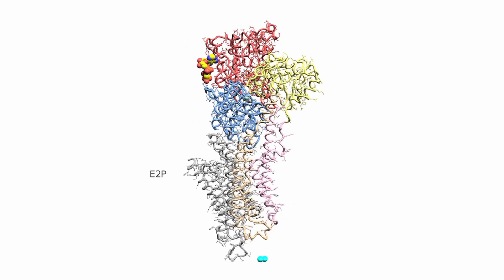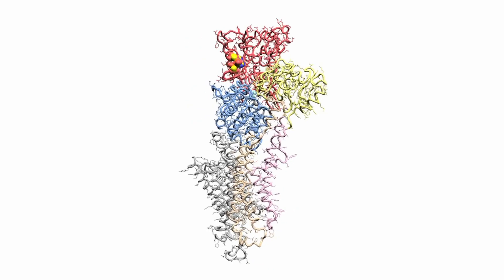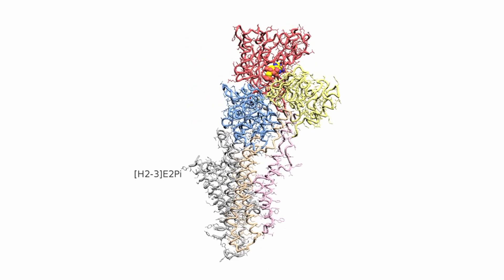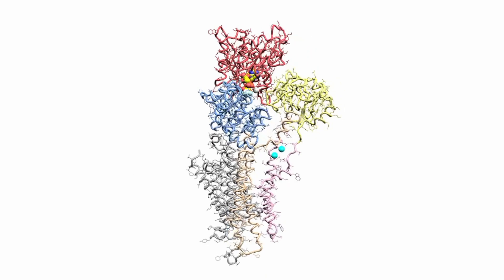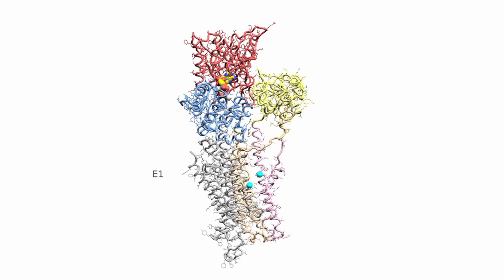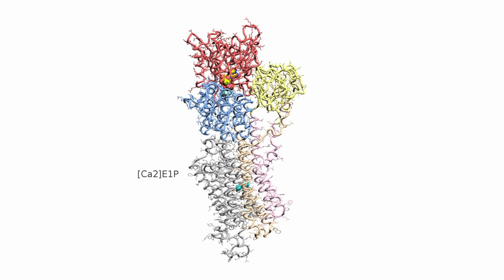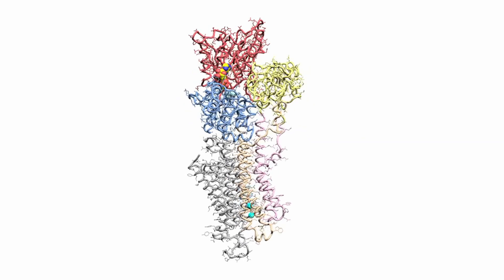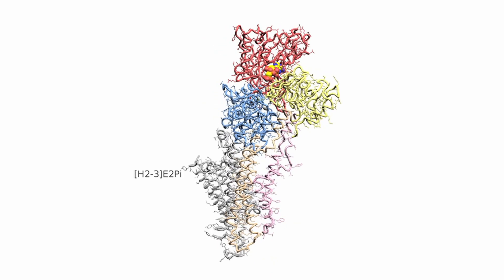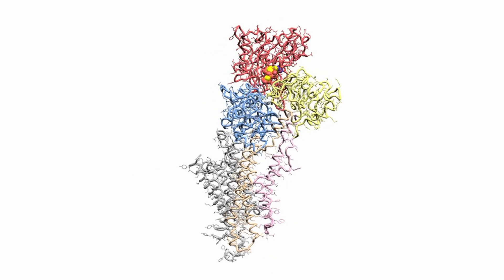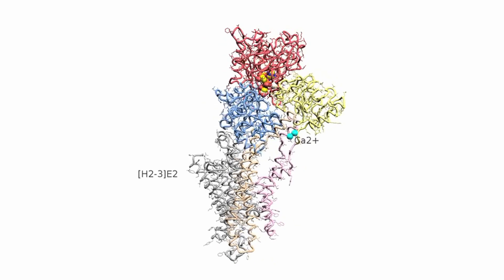There are many crystal structures of p-type ATPases at various cornerstones of the transport cycle. The calcium pump is particularly well described structurally, and it has been possible to make a morph of the pump cycling through different conformations upon pumping calcium, where the large movements of different domains are clearly visible.